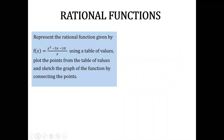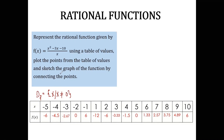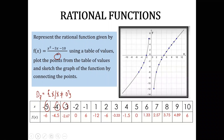Next, represent the rational function f(x) = (x² - 3x - 10)/x using a table of values. The domain of f is the set of all x such that x should not be equal to 0, because our denominator would be 0. Choose values of x to substitute into the given function, excluding 0.